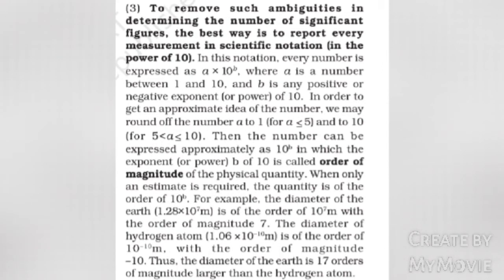To remove such ambiguities in determining the number of significant figures, the best way is to report every measurement in scientific notation — in the power of 10. In this notation, every number is expressed as a × 10^b, where a is a number between 1 and 10 and b is any positive or negative exponent. To get an approximate idea of the number, we may round off a to 1 if a ≤ 5 and to 10 if 5 < a ≤ 10, so the number is approximately 10^b. The exponent b is called the order of magnitude of the physical quantity.